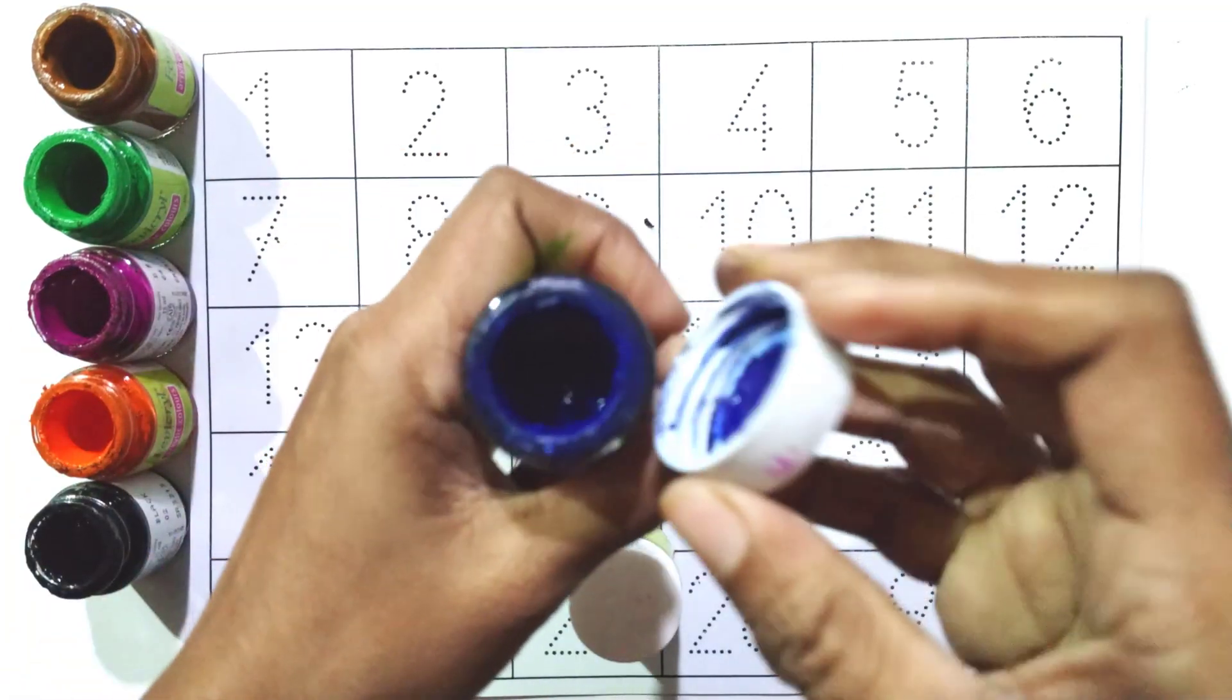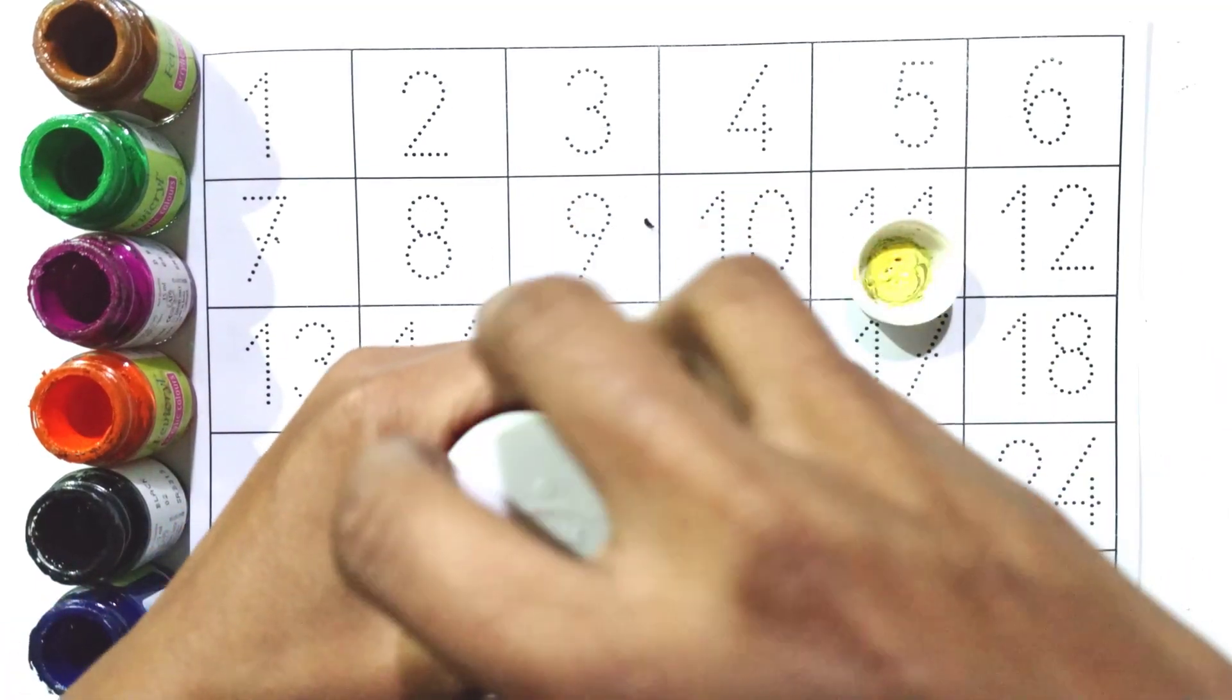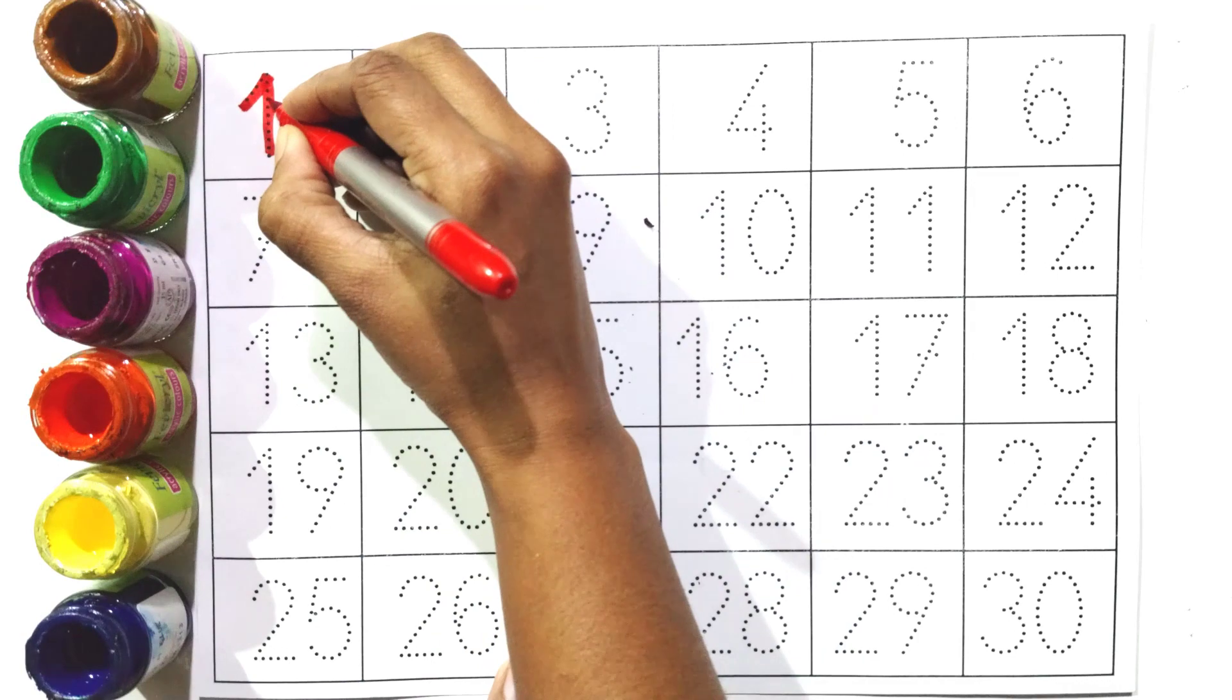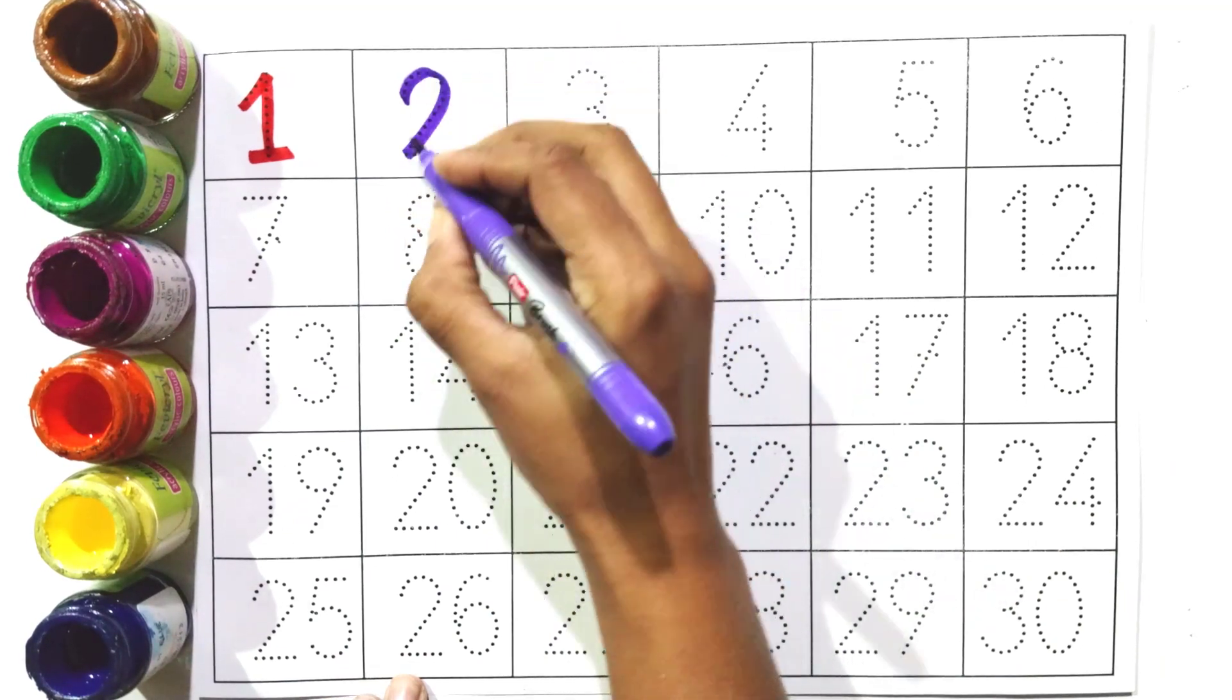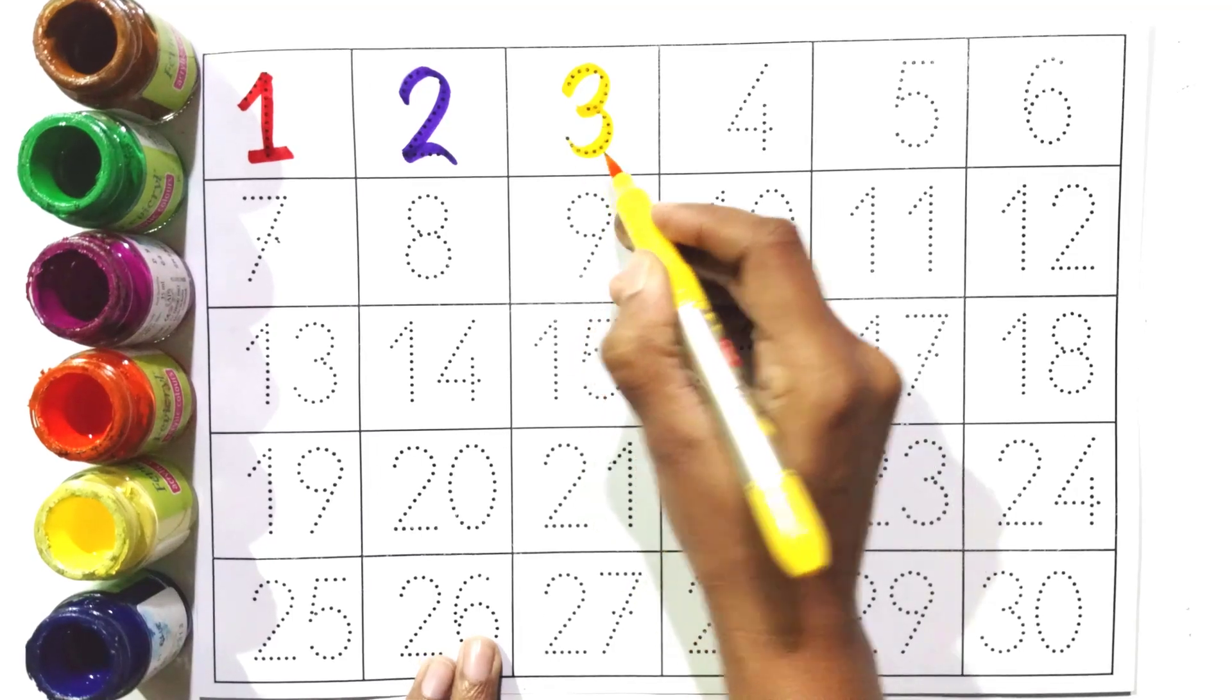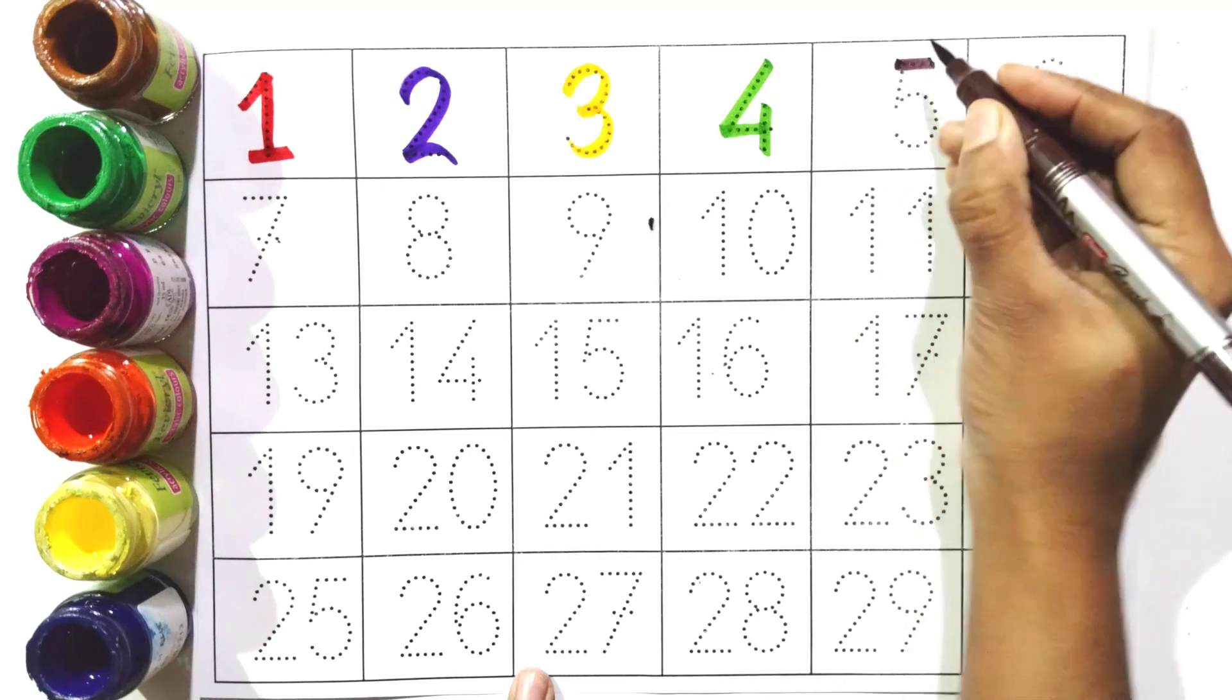Black, blue, yellow, red. Write with me one. One, two, two, three, three, four, four, five.